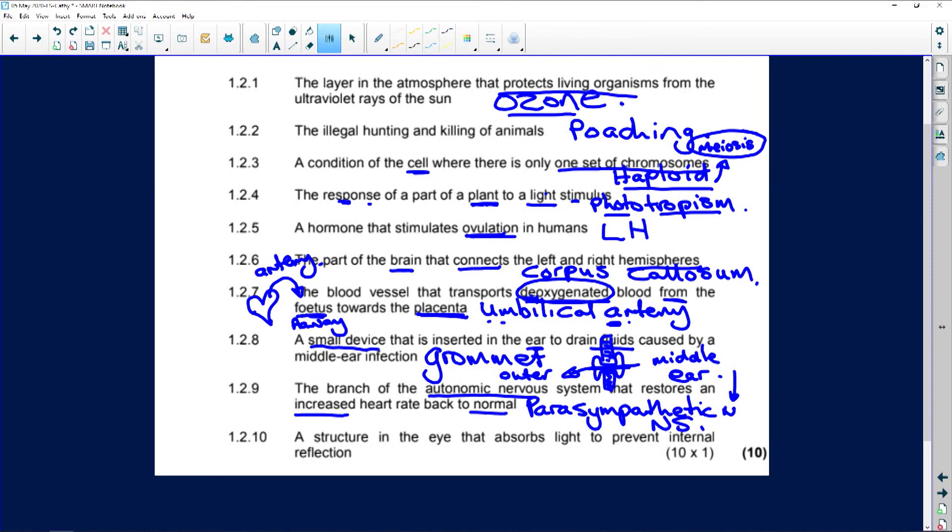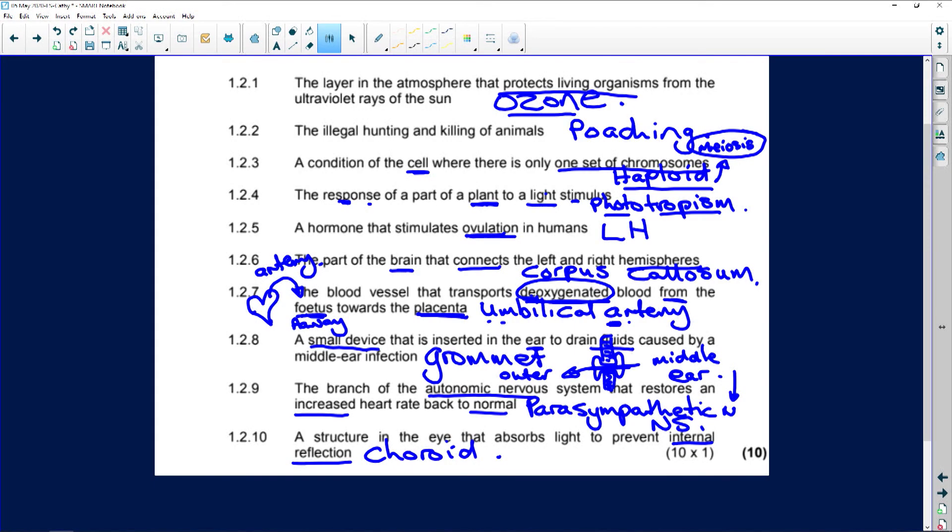The structure in the eye that absorbs light to prevent internal reflection, that is the choroid layer. It's the middle layer. The white layer is the sclera. That's your fibrous protective layer. Then you've got the choroid layer, which extends into the iris. And it's filled with brown pigment and lots of blood vessels. And its job is to absorb excess light, because if it doesn't, you'll just see little coloured stars all the time as the light bounces around in your eye. So it's the choroid layer.